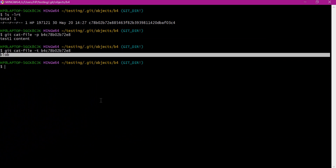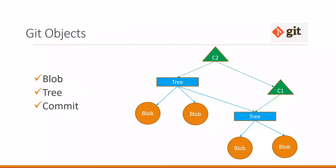Our file content is stored as a blob object in the git repository. So now we have seen how two files are stored as blob objects. If we want to create a new file with the same content as some other file, then a new blob object will not be created — it will use the existing blob object.